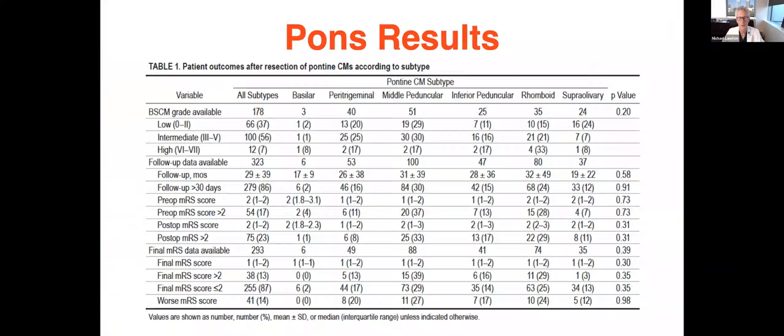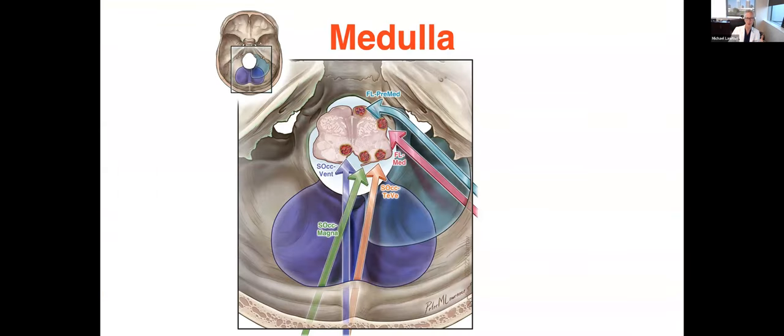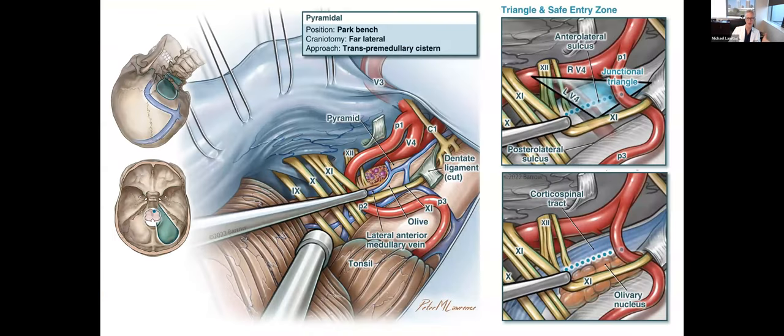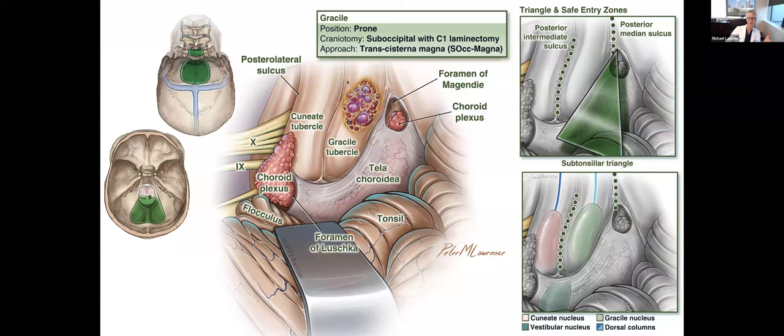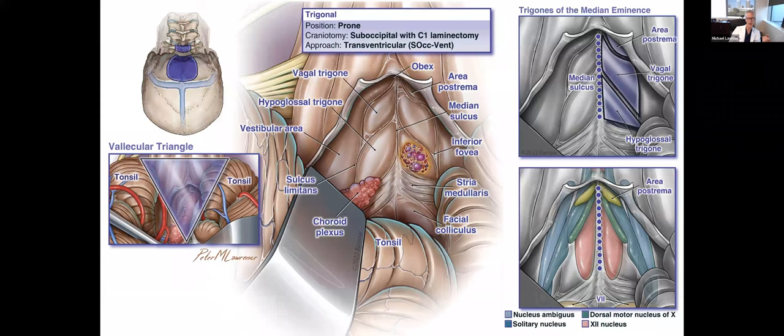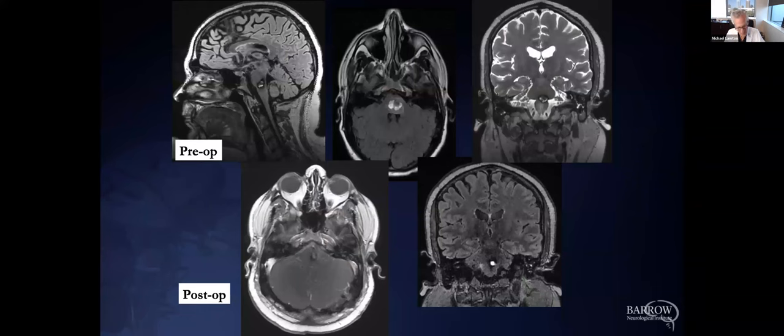So, medulla, same story. We have a bunch of different approaches down there. And these are some artists' pictures just showing the anatomy and how we get to these. Here's the beautiful malformation here sitting in, in this case, the gracile tubercle. We can get there through what we call a suboccipital craniotomy, just a little opening in the back there. And here's one on the floor of the fourth ventricle on the medulla side, and we can get there as well. So really we've worked out all the different ways to do that.